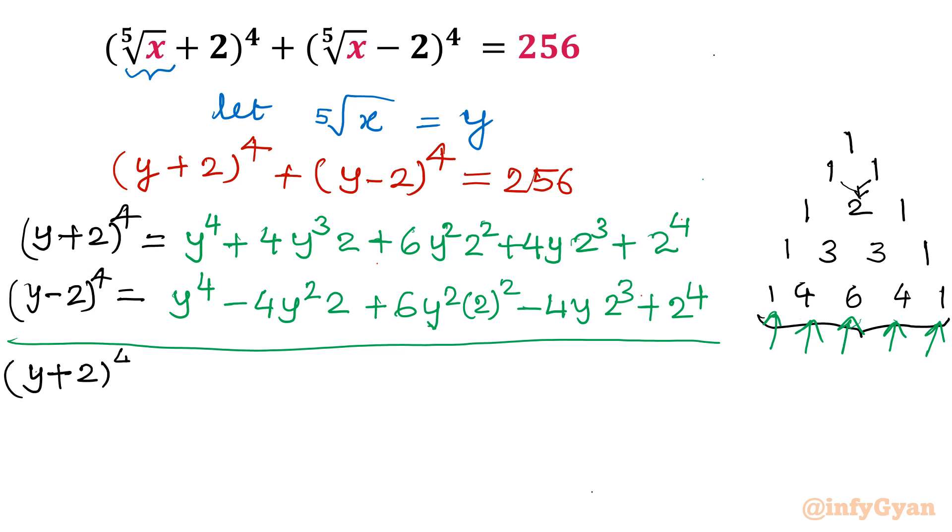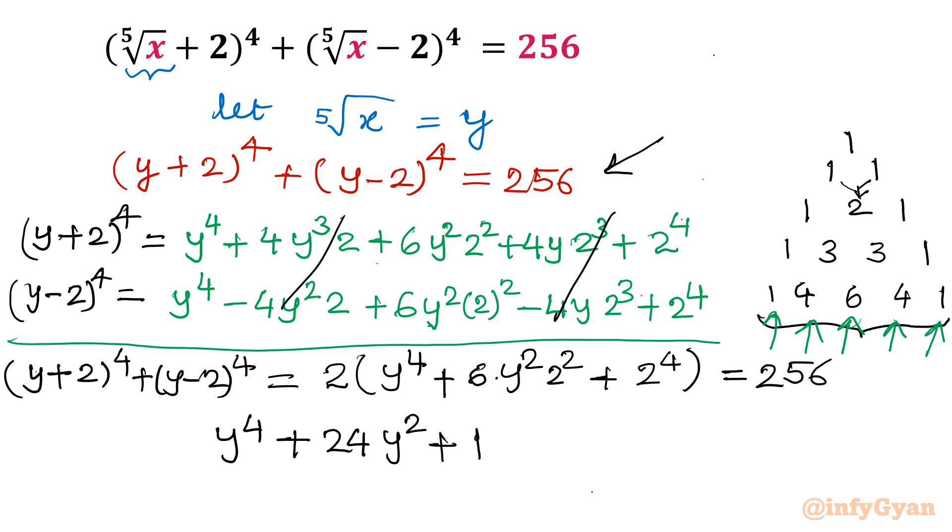y plus 2 whole power 4 plus y minus 2 whole power 4 equals 2 times in bracket y power 4 plus 6 times y square 2 square plus 2 power 4. That's 2 times y power 4 plus 6 times 4 y square plus 16 equal to 256. So this is 128.